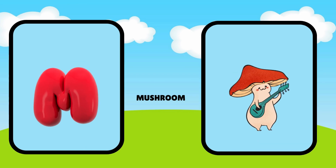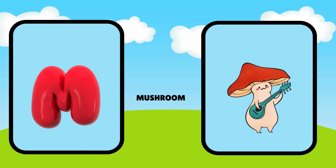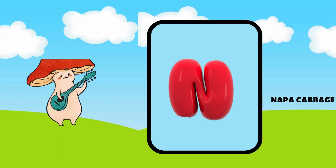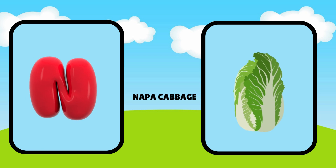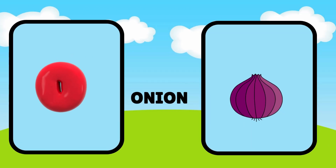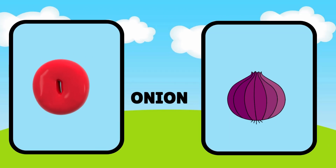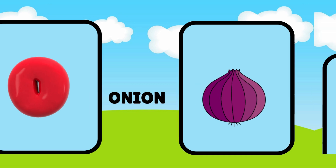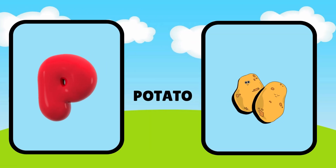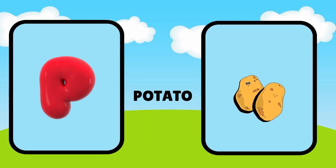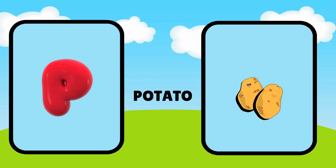M is for mushroom, muh, mushroom. N is for napa cabbage, nuh, napa cabbage. O is for onion, o, onion. P is for potato, puh, potato.